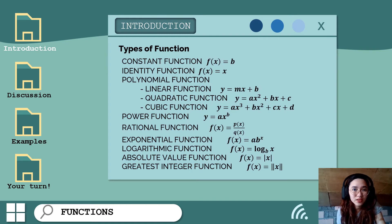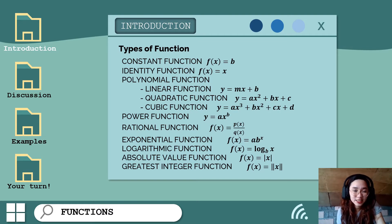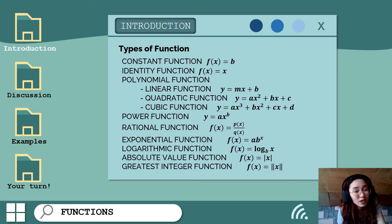Functions come in different forms. Before we proceed with our discussion, let's review the different types of functions we'll encounter in this module. Constant function: it is the function that has the same output value no matter what your input value is — the output is always the same regardless of the input.